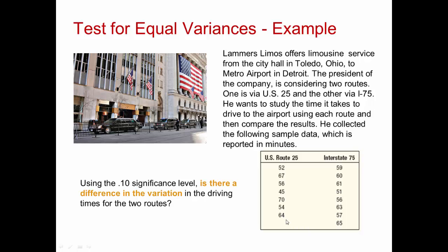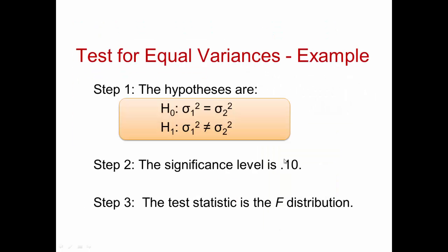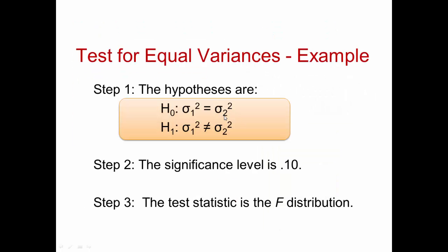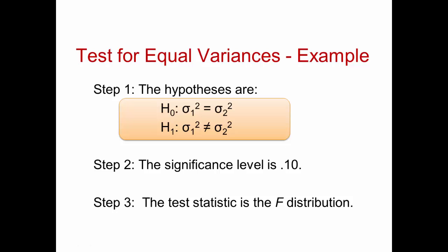The first step of hypothesis testing is to assume nothing is going on and create our null hypothesis. Our null hypothesis is that the variance for US Route 25 is the same as the population variance for Interstate 75. Our alternate hypothesis is that the population variance of driving times between US-25 and I-75 are not the same. We've selected a significance level of 0.10 and determined that the test statistic is the F distribution.